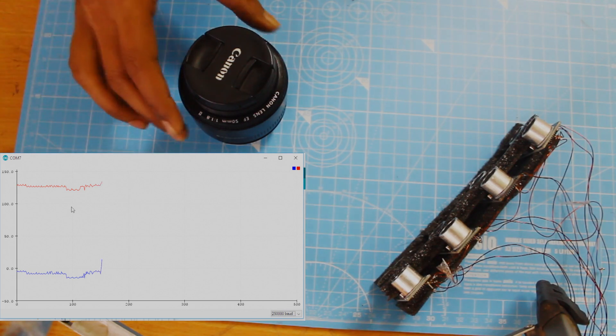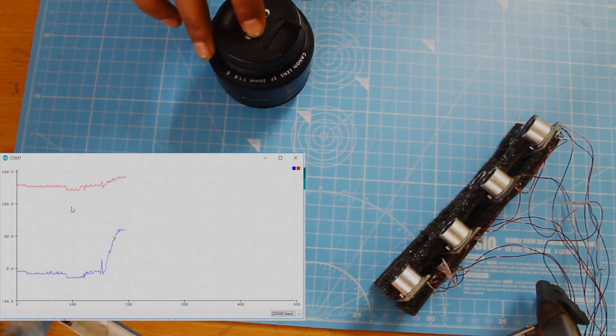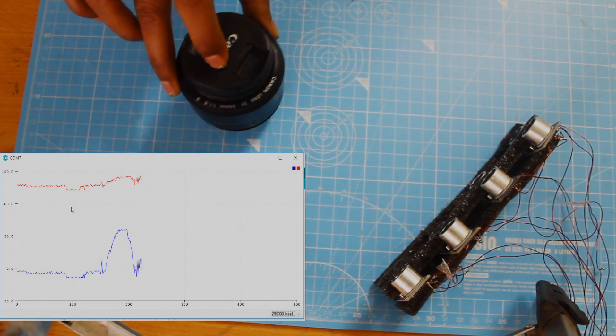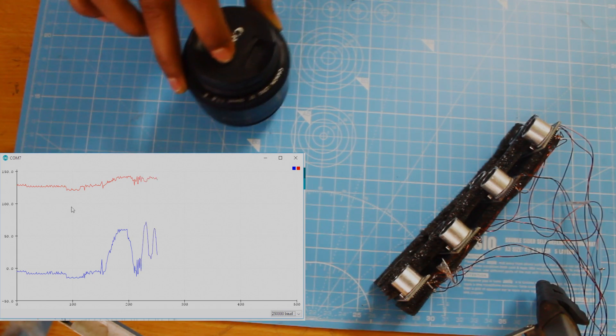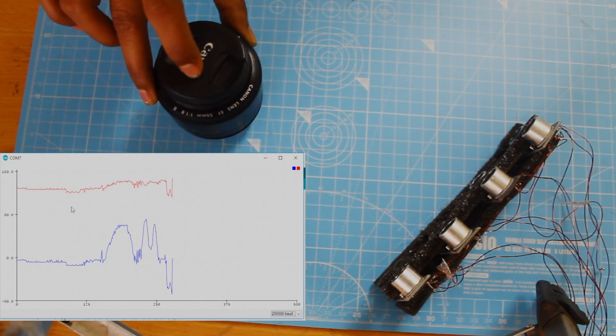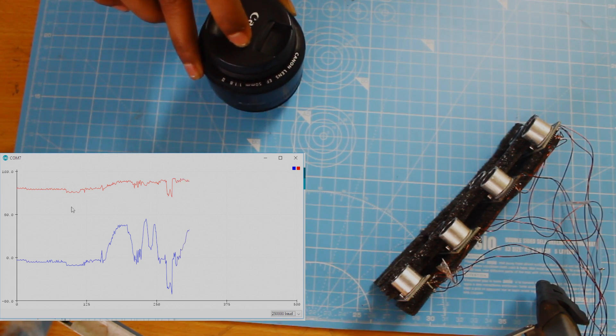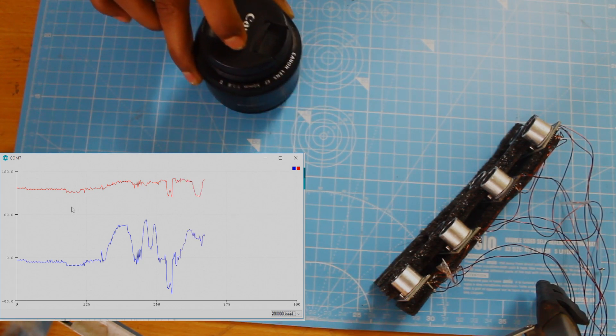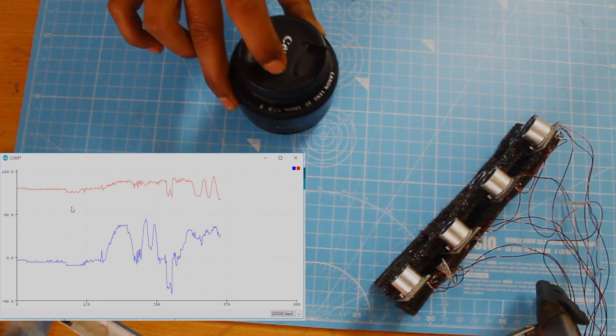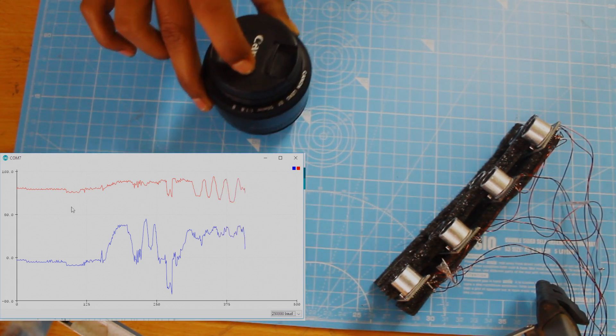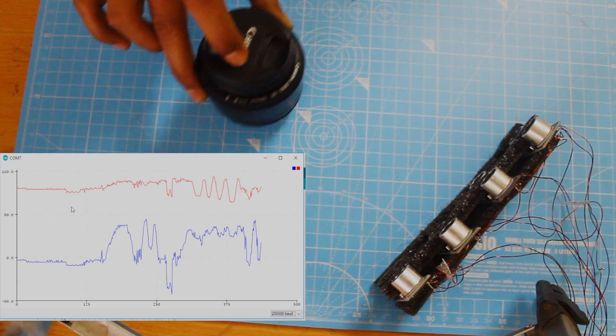So here I placed one object camera lens in front of this setup and try to move it in both of the axis. And we can see the variation in serial plotter. However, accuracy in lateral direction is not as good as in straight direction. But still it is far better than what we got previously.